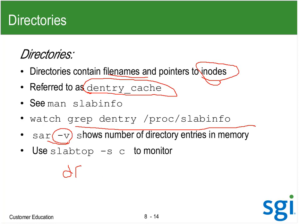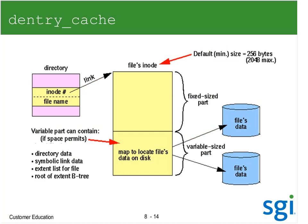The dentry cache has an inode number and the file name. We don't put that in the inode because we need variable file name sizes. The inode has a variable part that could contain directory data, symbolic link, an extent list for the file, or the root of a B-tree. By default, 256 bytes are allocated for an inode. For things like DMF, they want to increase the inode size because DMF data is attached to the inode.